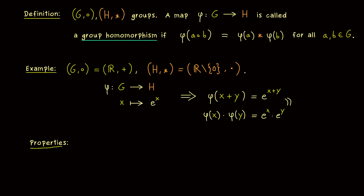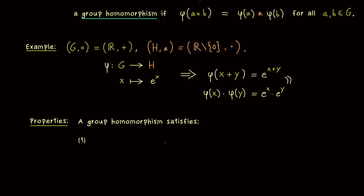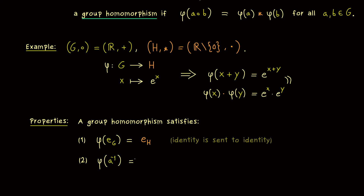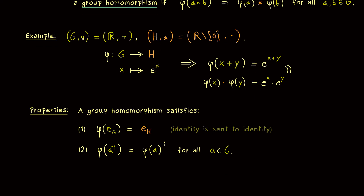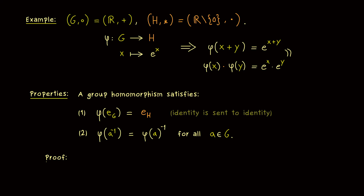But in order to do that, we first have to prove the two properties a group homomorphism has as well. The first one is: if we take the neutral element in G — let's call it e_G — and put it into phi, we get the unique neutral element in H. So this property we can remember as: the identity is sent to the identity. And to describe the second property, we want to put in an inverse. It should not matter if we first apply phi and then the inverse, or the other way around. This means phi of A inverse should equal phi of A inverse, and we want that for all A in G. These are the two important properties that we could also have included in the definition, but that is not needed because we can simply prove them.